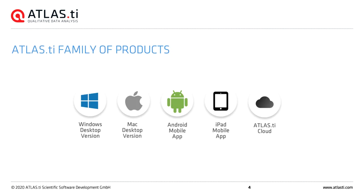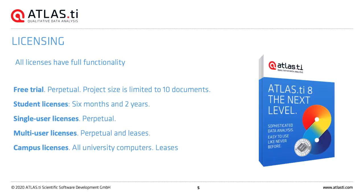The family of Atlas TI products includes Atlas TI Desktop for Windows and Mac, Atlas TI Mobile for Android and iPad, and Atlas TI Cloud. In terms of licensing, all licenses are fully functional — we don't distinguish by functionality. We have a free trial, which is a perpetual license limited to 10 documents. We also have student licenses for 6 months and 2 years, heavily discounted. Single-user licenses are perpetual. Team licenses offer perpetual or annual lease options, and campus-wide licenses are leases.